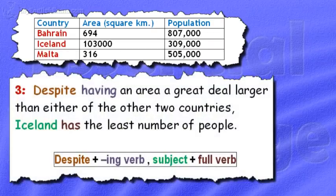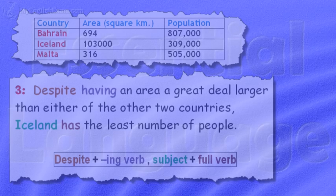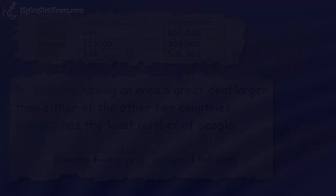Model 3. Despite having an area a great deal larger than either of the other two countries, Iceland has the least number of people.